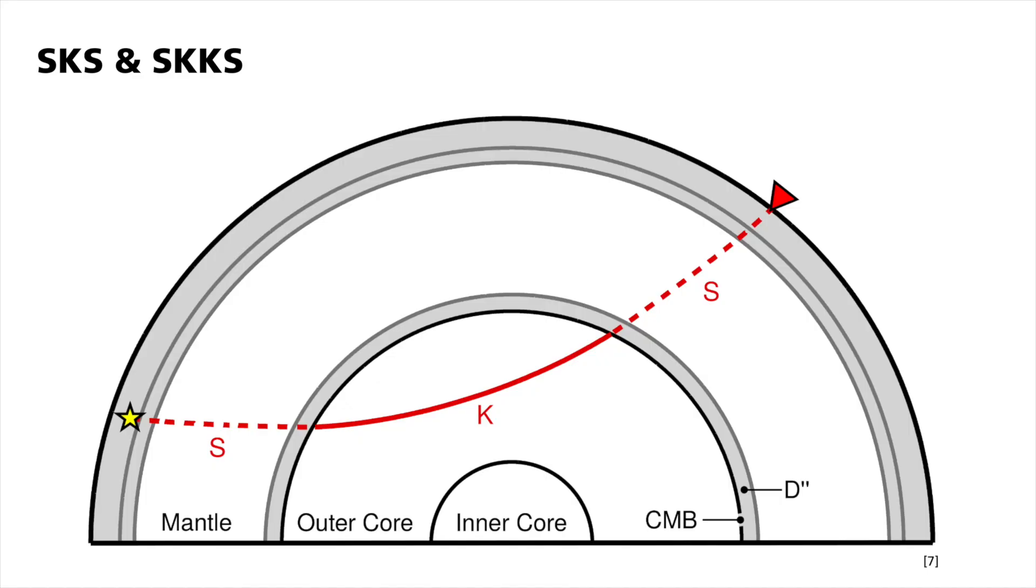This anisotropy can be studied using polarized shear waves. What kind of data do you analyze especially? We use core-refracted shear waves like the SKS and SKKS phase. Compared to SKS, the SKKS phase has one more underside reflection at the core-mantle boundary, halfway between the source and the receiver, as you can see in the figure.